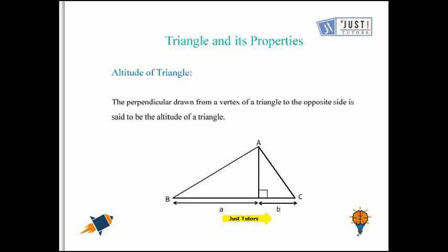If we talk about vertex C, from C to the opposite side which is AB, we will draw a perpendicular line. The line from C is perpendicular to AB.